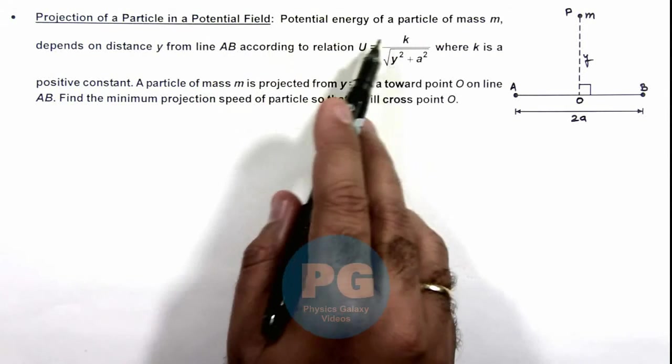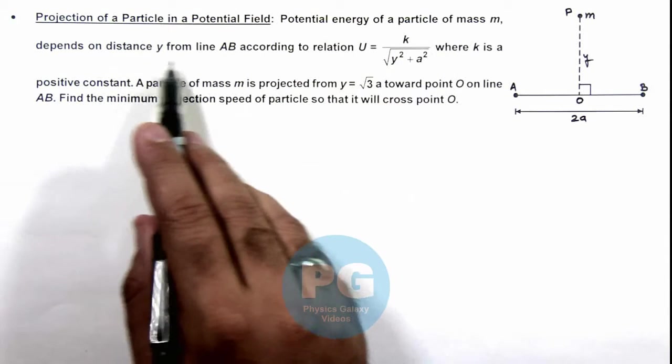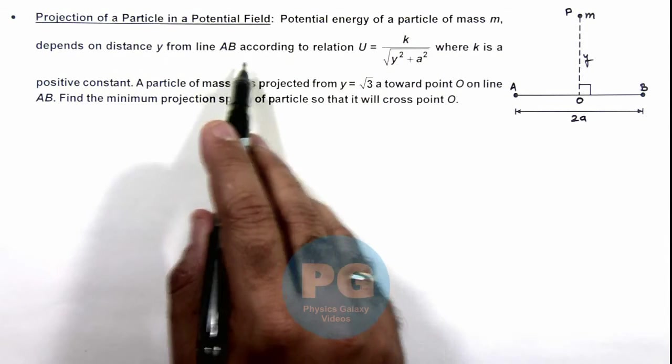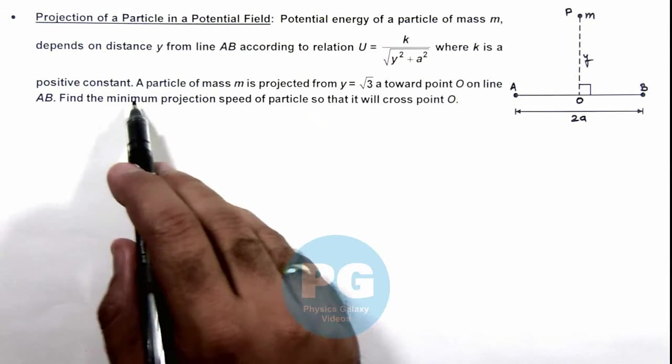Here we are given that the potential energy of a particle of mass m depends on distance y from line AB according to the relation given here, where k is a positive constant.